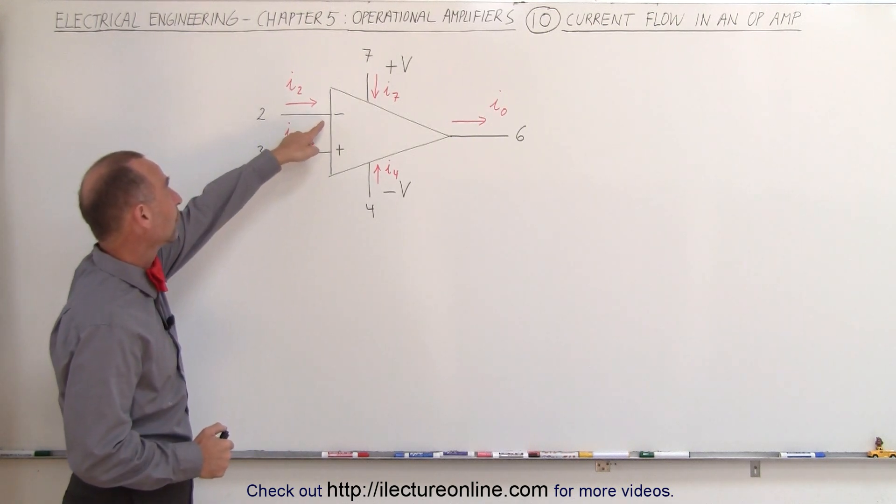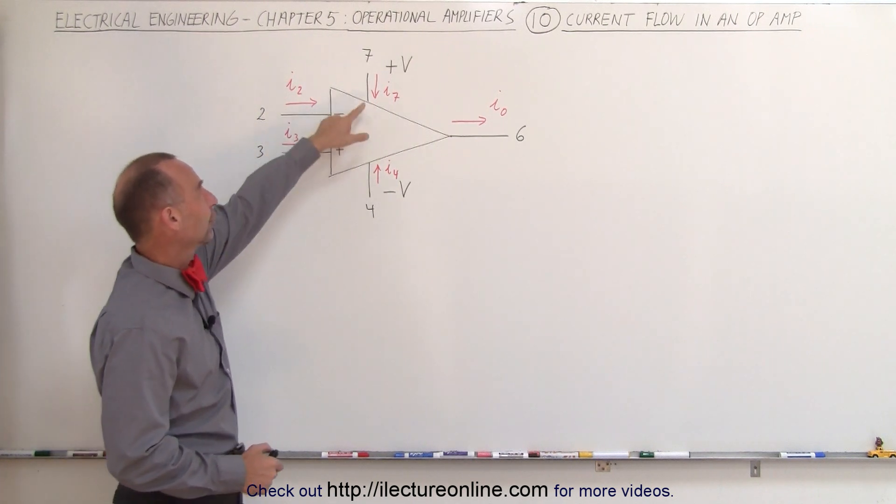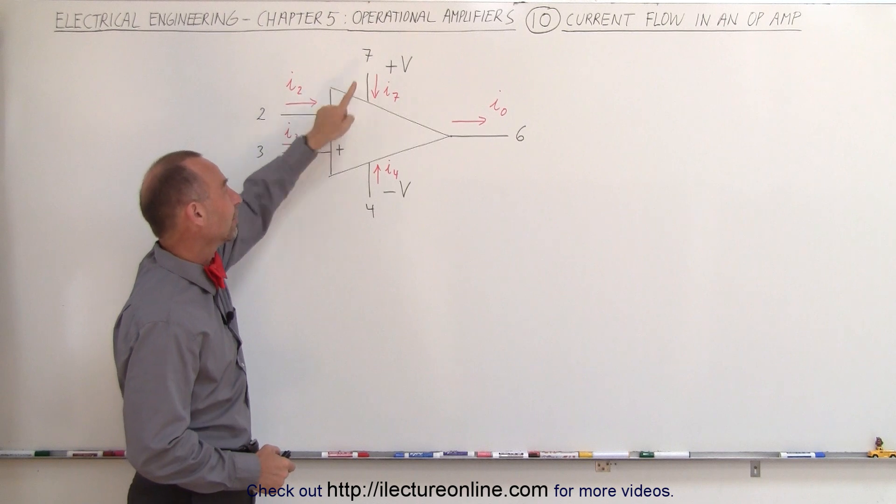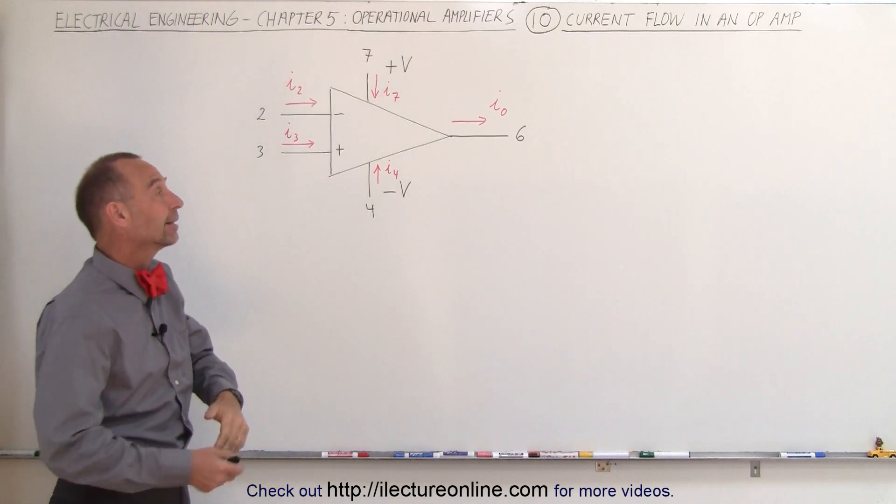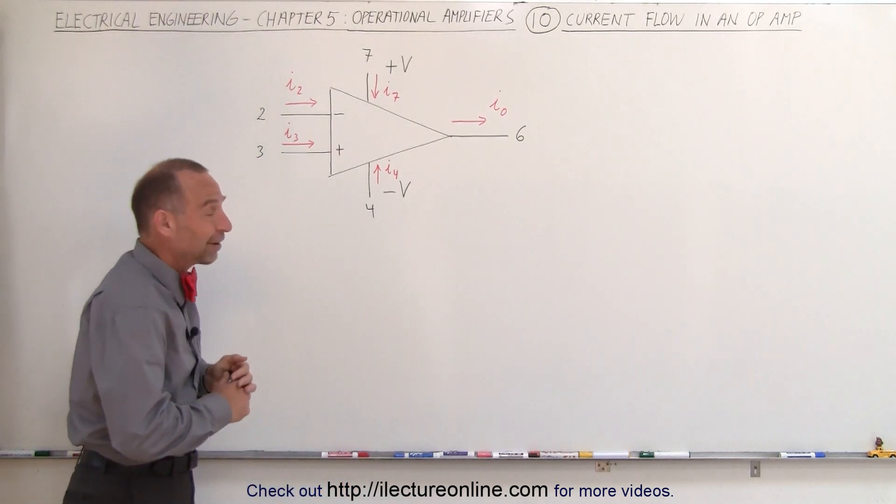We assume that there's no current flow between the inverting input and the non-inverting input. We ignore the current flow from the voltage supply on the positive side and voltage supply on the negative side, and we often even ignore the current output of the operational amplifier.